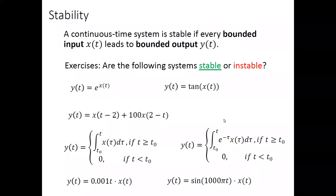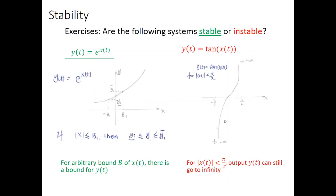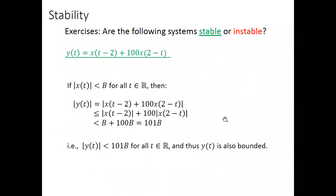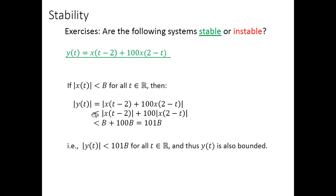Let's look at the rest of those five examples to check whether each system is stable or unstable. To check from the definition, we always first assume that the input is a bounded signal. Let's assume |x(t)| < B for all time t, then let's look at whether the output is bounded or not.